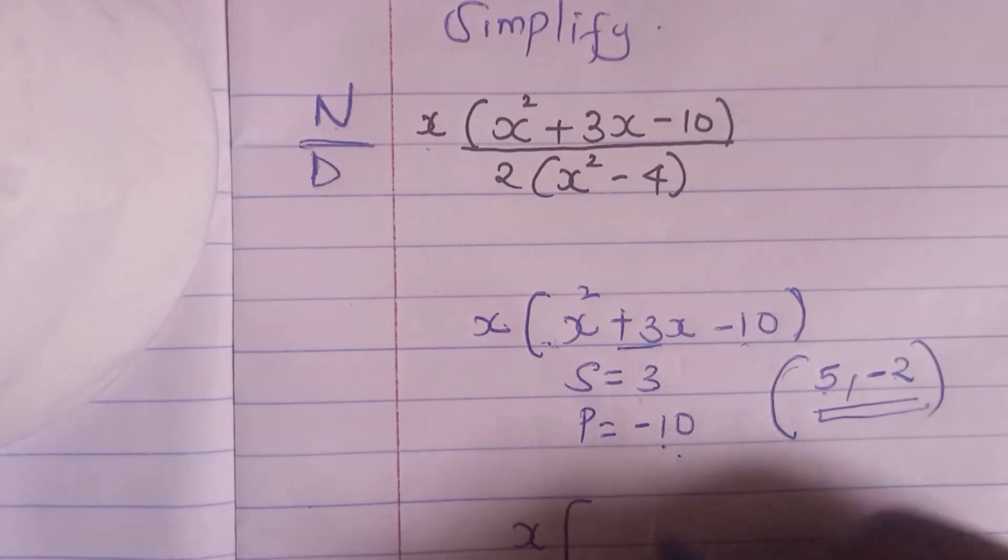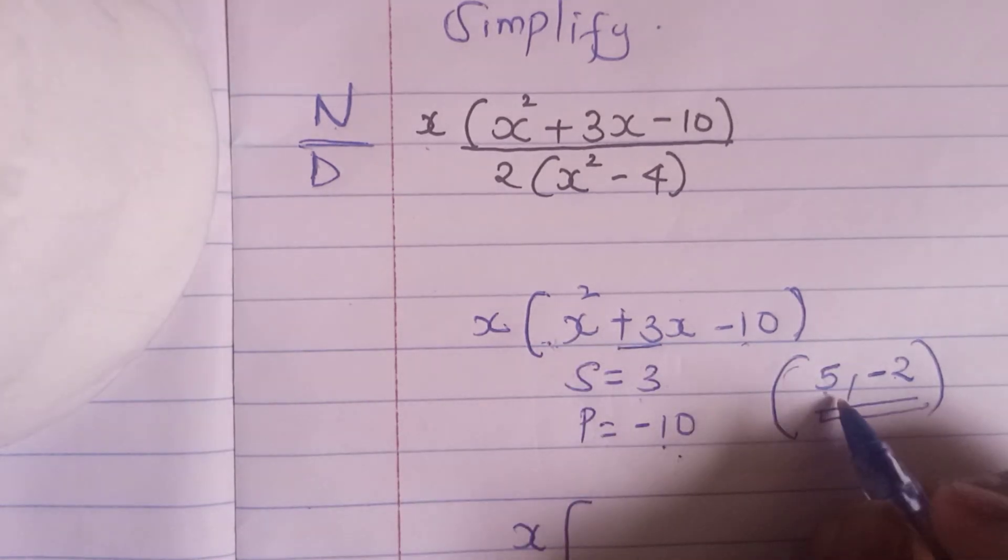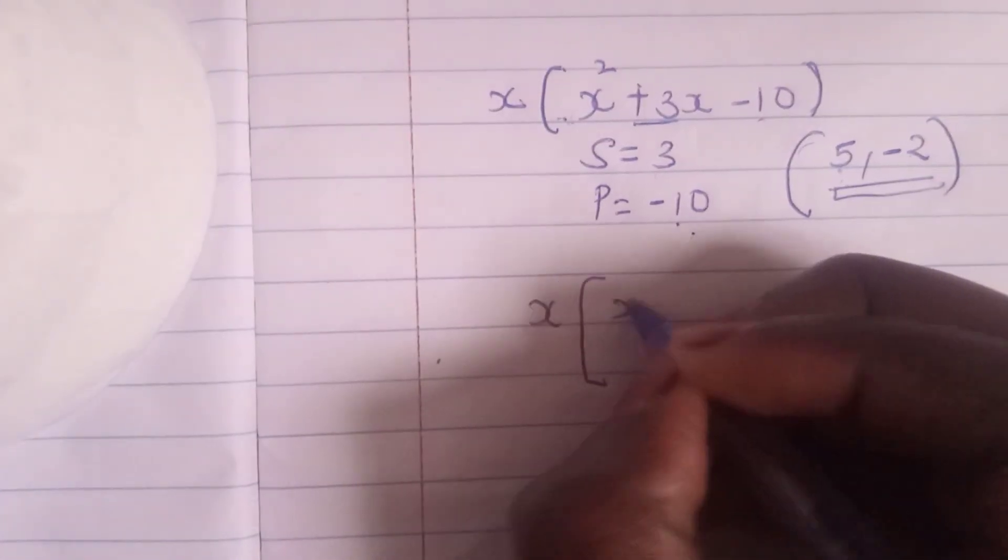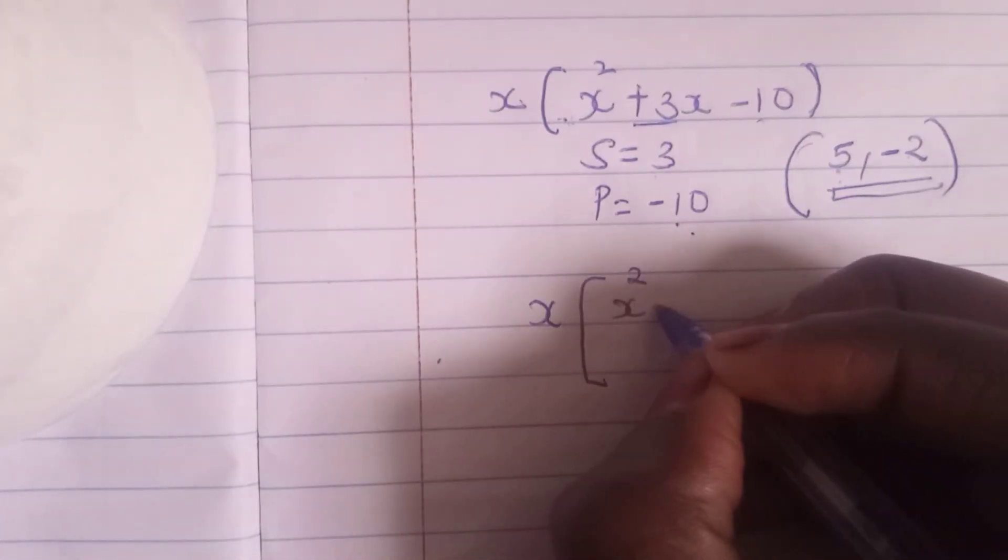So here we go. So x, this x that is outside the bracket, into our quadratic equation and I am substituting these two numbers. So this will be x squared plus 5x, this 5 here, minus 2x minus our 10 here. Close the bracket.